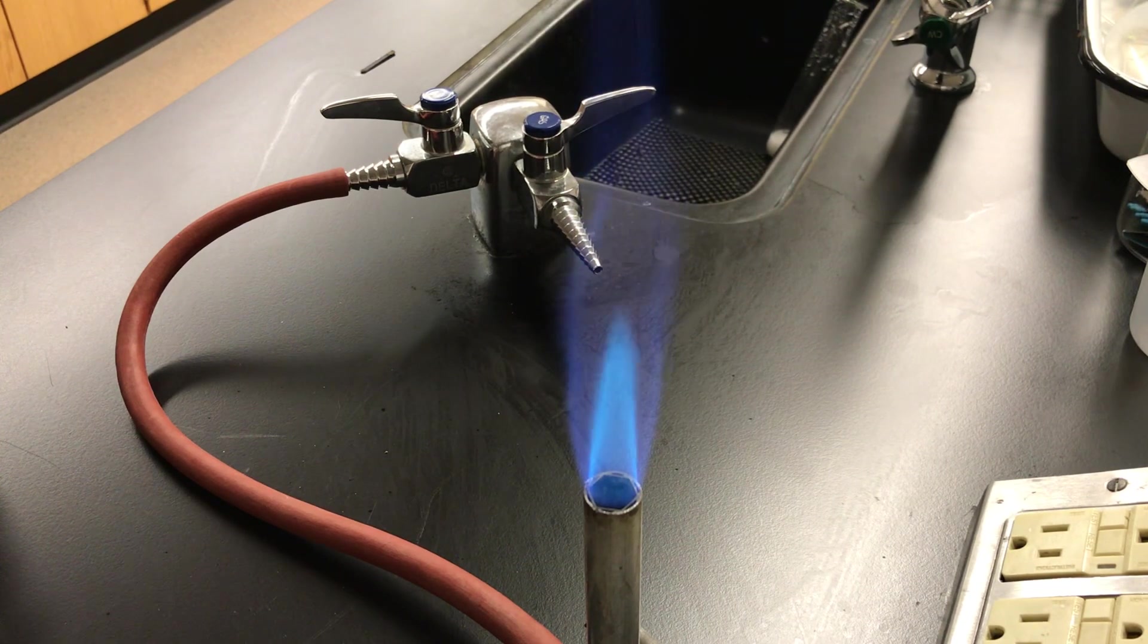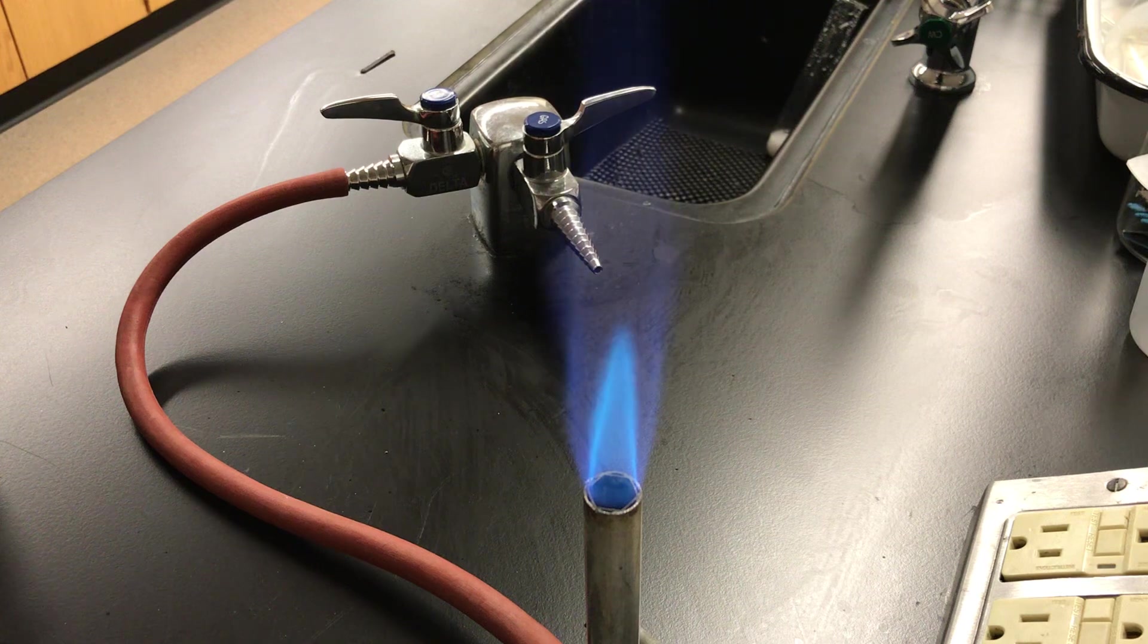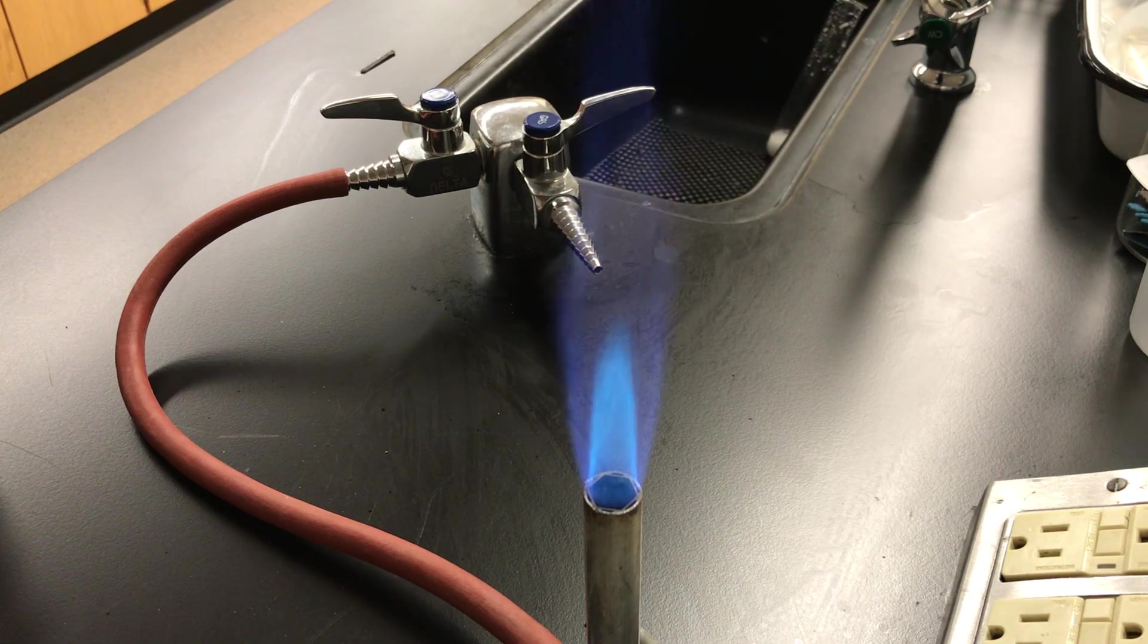Then we'll go to group two, calcium, strontium, and barium salts. And then we'll use a transition metal, a copper salt.